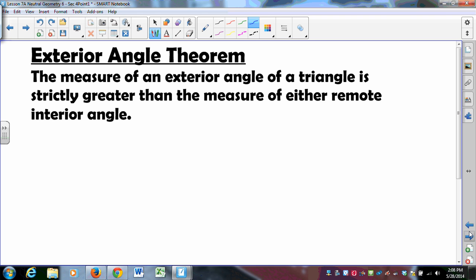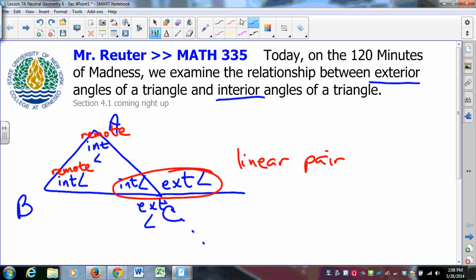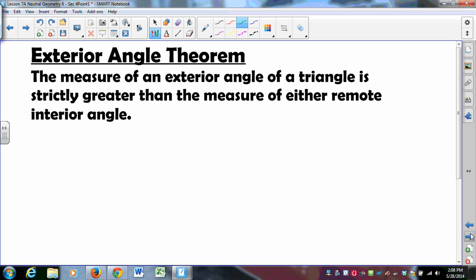The measure of an exterior angle of a triangle is strictly greater than the measure of either remote interior angle. Now, I don't know how good your high school geometry was. In my high school geometry course, I learned that if you add these two measures, you get that one. And that works in Euclidean geometry, but it doesn't hold in neutral geometry. You need the Euclidean parallel postulate to get that to work. So, what I'd like to do is I'd like to prove the neutral theorem, and the neutral theorem says that the exterior angle is strictly greater than either remote interior angle. So, here's how we do this.